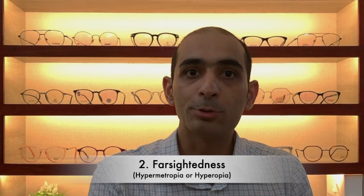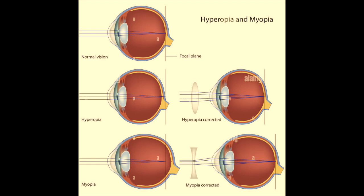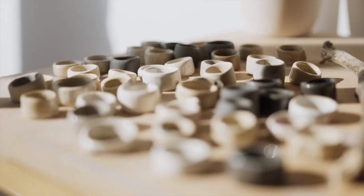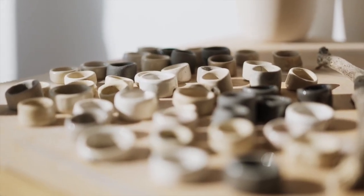Farsightedness or hyperopia. This condition occurs when the eye is shorter than normal or the cornea is too flat, causing light to focus behind the retina instead of on it. As a result, close objects appear blurry while distant objects may be clear.